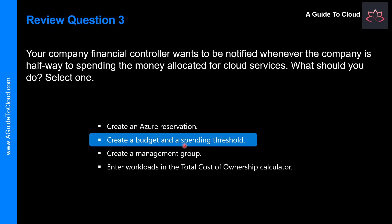The correct answer is create a budget and a spending threshold. Billing alerts help you monitor and manage billing activity for your Azure accounts. You can set up a total of five billing alerts per subscription, with different thresholds and up to two email recipients for each alert. Monthly budgets are evaluated against spending every four hours, and budgets reset automatically at the end of the period.